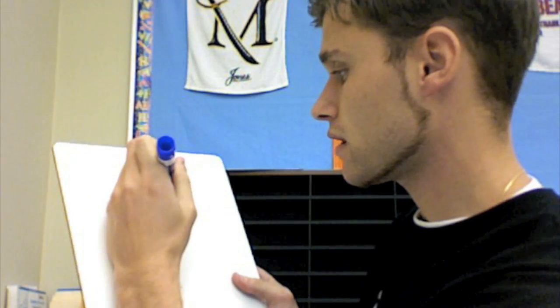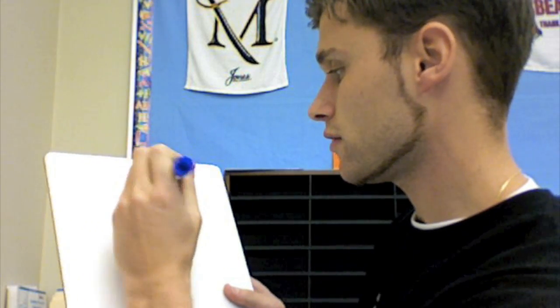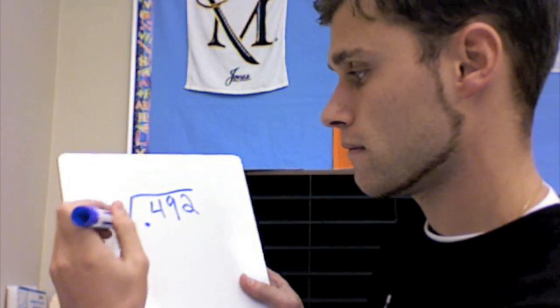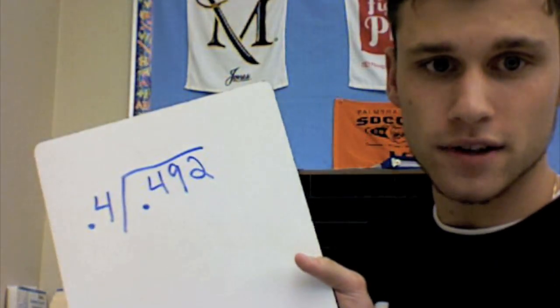So we're going to take a look at the problem right here. I'm going to do 0.492 divided by 0.4. Okay, so right there's our problem.